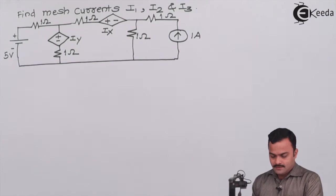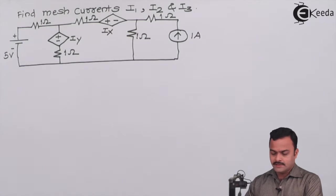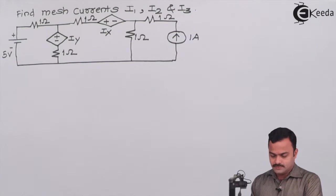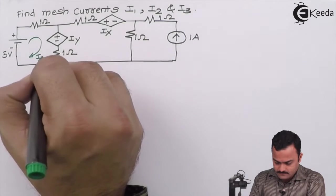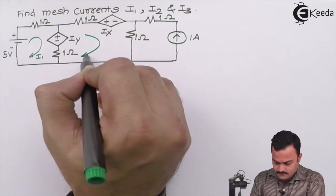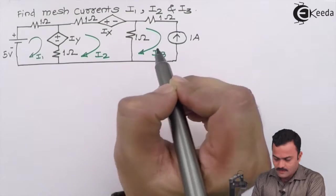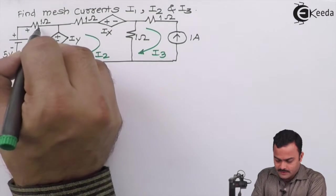Here is the problem — we are supposed to get mesh currents i1, i2, i3 for the circuit where there are two dependent sources given. The dependent sources are current controlled voltage sources. Let's mark i1, i2, i3 mesh currents like this.